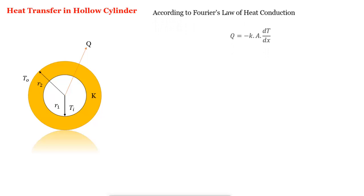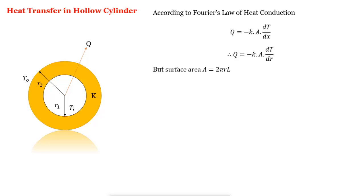Fourier's law gives Q equal to minus K·A·dT/dx. But here the flow of heat is in the radial direction, so in place of dx we put dr. Our equation becomes Q equal to minus K·A·dT/dr. We know that the surface area of the cylinder is 2πRL, so we substitute 2πRL in place of A. Our equation becomes Q equal to minus K·2πRL·dT/dr.